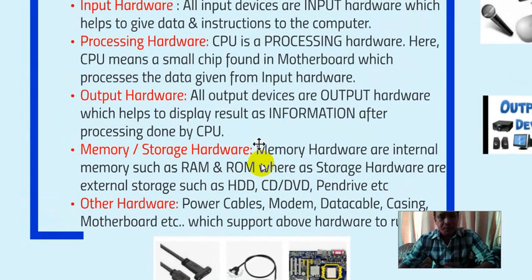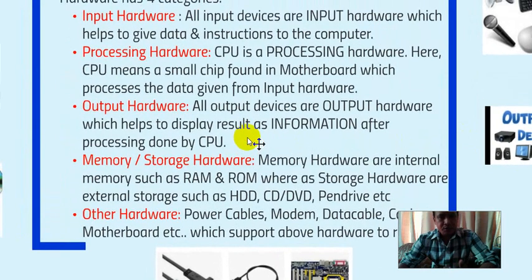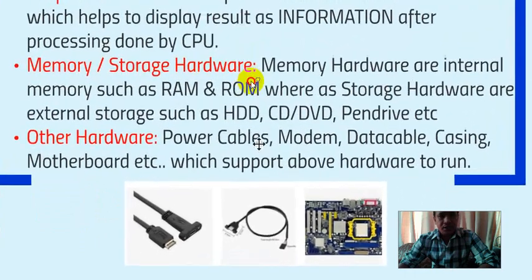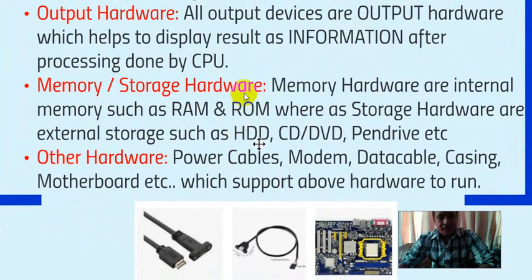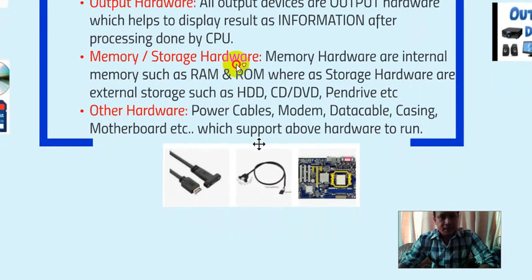Whenever you give some input, it will be processed and displayed through the output device — that is the straight path: input, process, output. But whenever you need that information later in the future, you need to save it. All raw data or processed data will be stored in memory hardware or storage hardware. Internal memory is kept inside the motherboard, and external memory includes CD, DVD, hard disk, and pen drive.